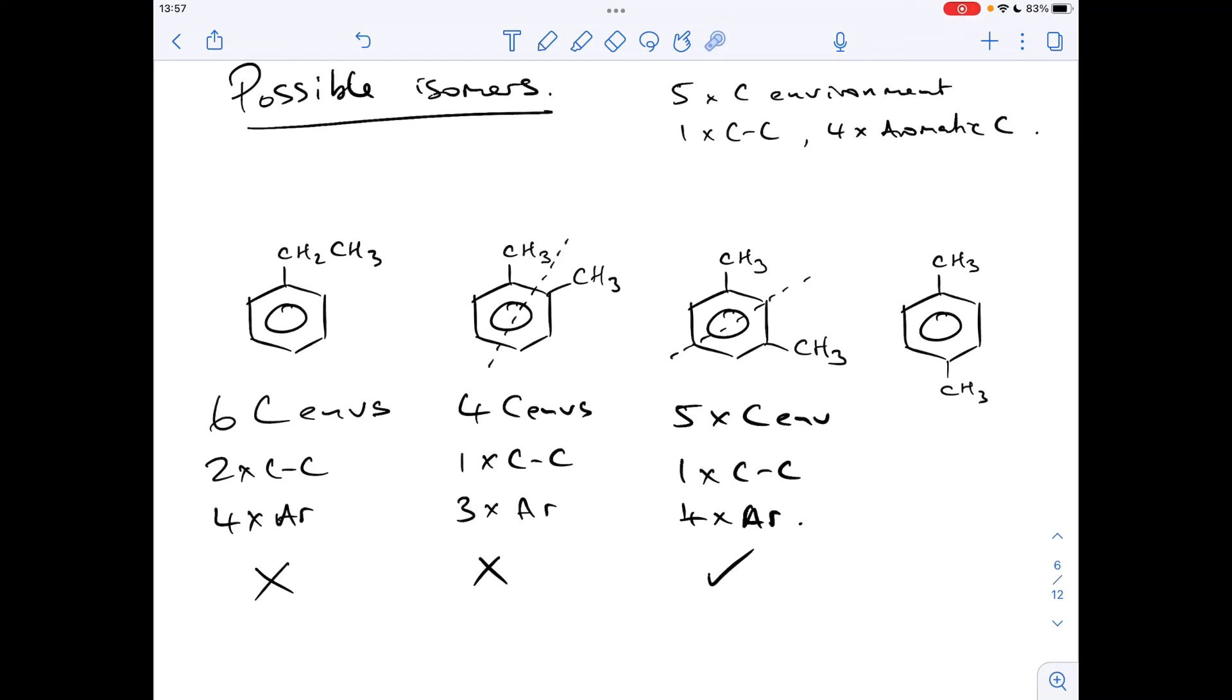And let's just rule out the last one. We've got to talk about all of them. So in this one, we've actually got two lines of symmetry. We've got one down there. One across there. So they're equivalent to each other. They're equivalent to each other. They're equivalent to each other. And all these are equivalent to each other. So we've got a total of one, two, three carbon environments. One, two aromatic environments.